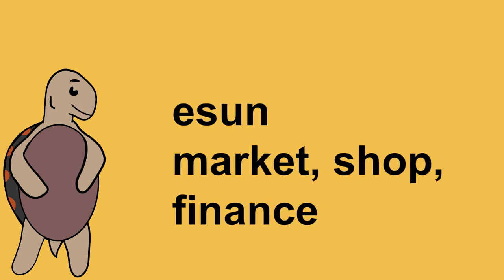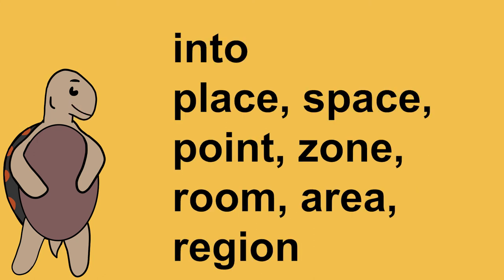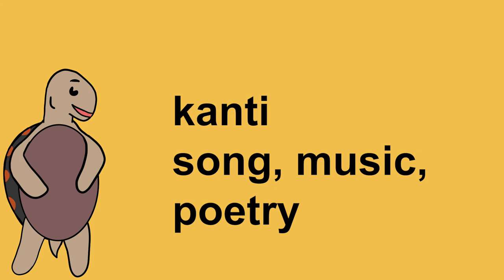Now the rest of the vocabulary. 'Essun': market, shop, finance. 'Into': place, space, point, zone, room, area, region. 'Kanti': song, music, poetry.